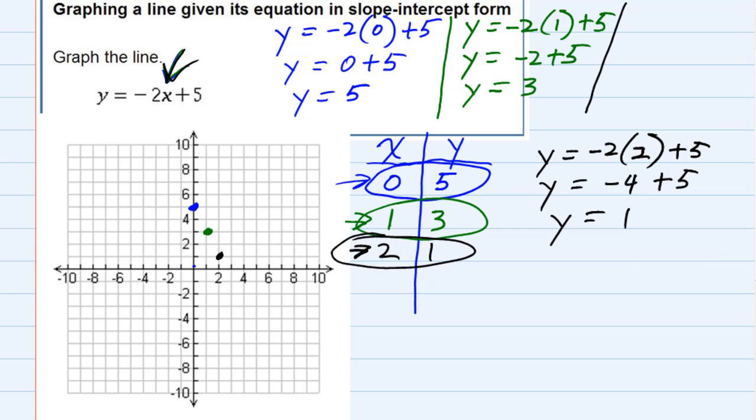And since this is a linear equation, we should have a straight line. It looks like our three dots line up nicely. So just connecting them, this would be the graph of our line.